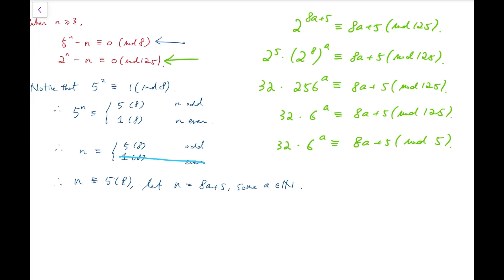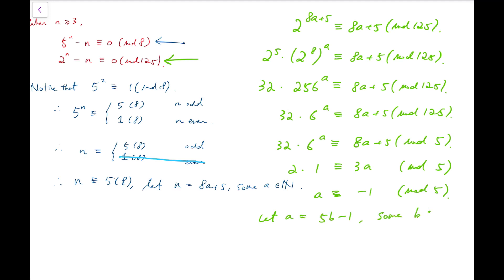Then all numbers become much smaller: 2 times 1 is congruent to 3a mod 5. We know that 3a congruent to 2 mod 5 implies a is congruent to minus 1 mod 5. So we let a equal 5b minus 1 for some natural number b. Putting this back into n, we can say that n is now equal to 40b minus 3.